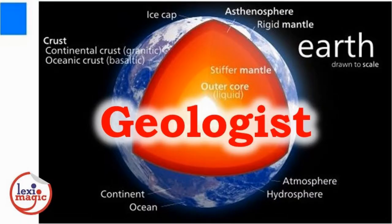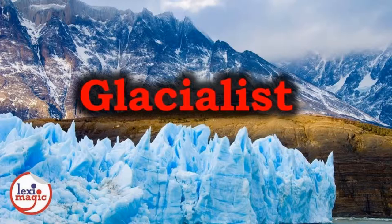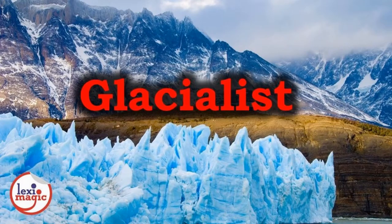A geologist studies the solid and liquid elements that constitute the planet. They also study natural hazards like floods, earthquakes, volcanic eruptions, etc. A glacialist studies geological phenomenon with regards to the drift and impact of glaciers.